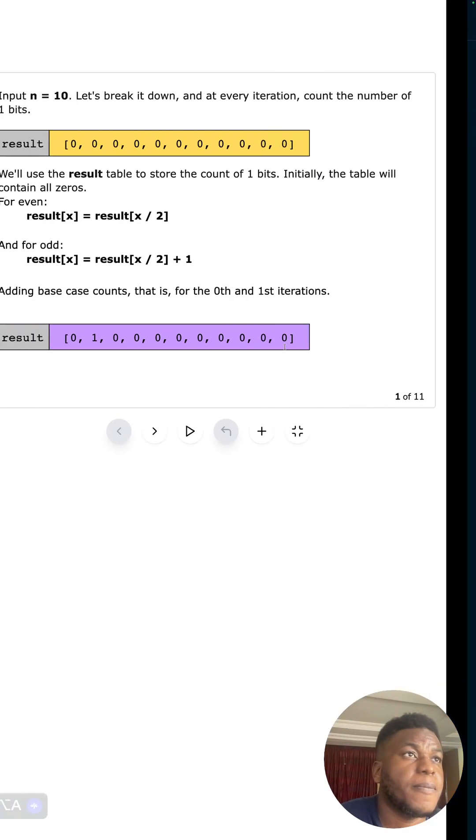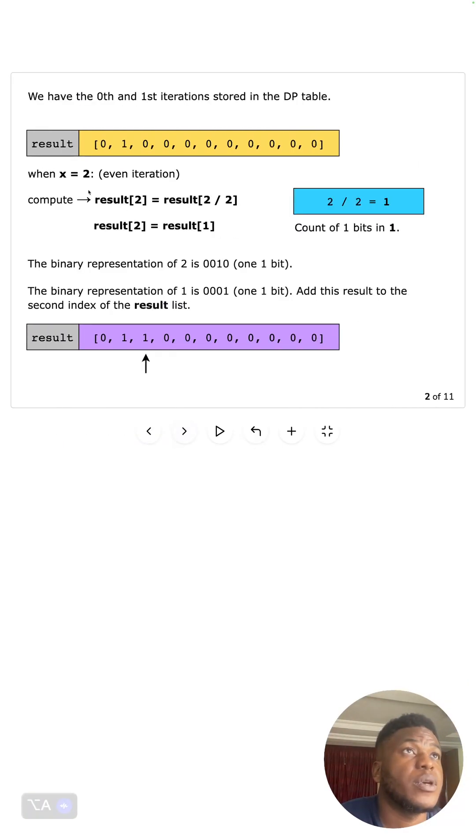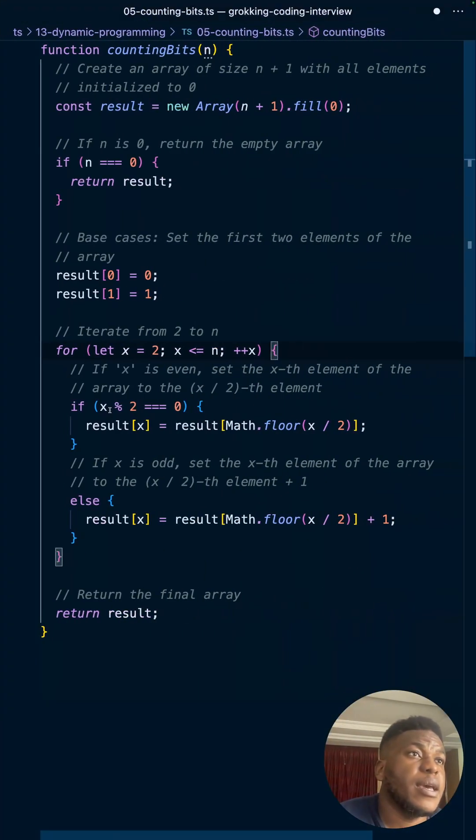We're iterating from 2 to n. For each case, 2 is an even iteration, so we're going to pick what is half of 2, which is basically the result at 1. So 2 divided by 2 is 1, so whatever is at 1 is going to be what's at 2.